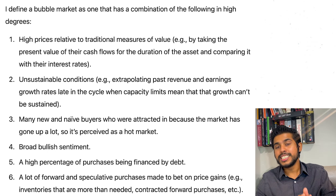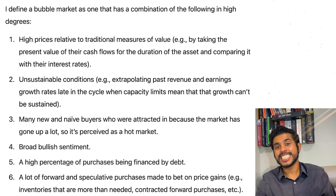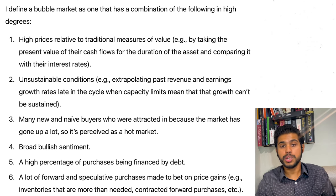Number one is high prices relative to traditional measures of value, and he uses the example of discounted cash flows. If you're discounting cash flows at a certain rate today and most stocks appear overvalued, this is one sign that we may be in a bubble.